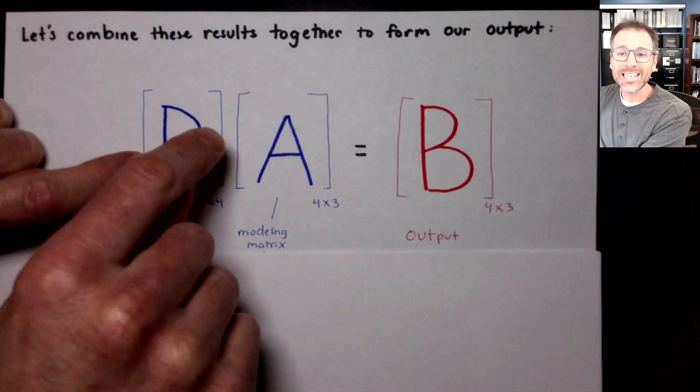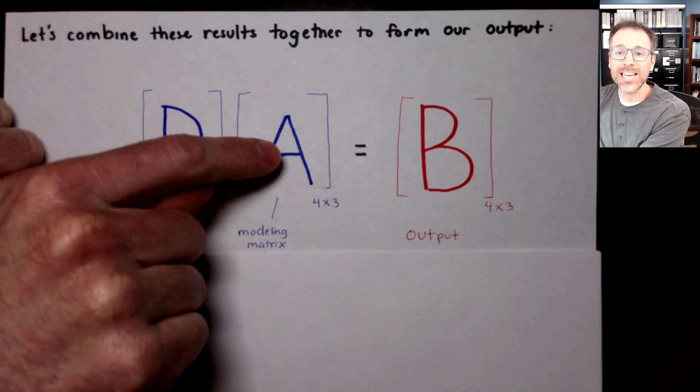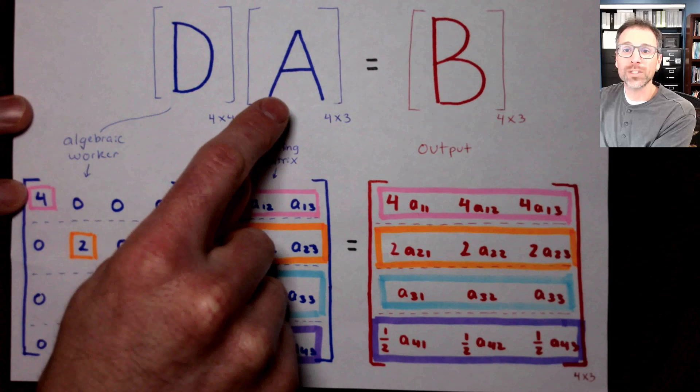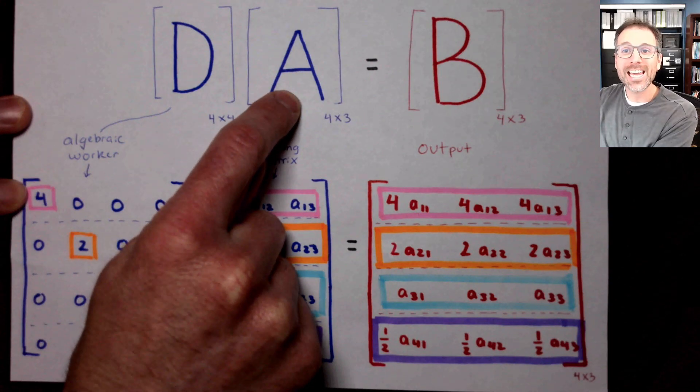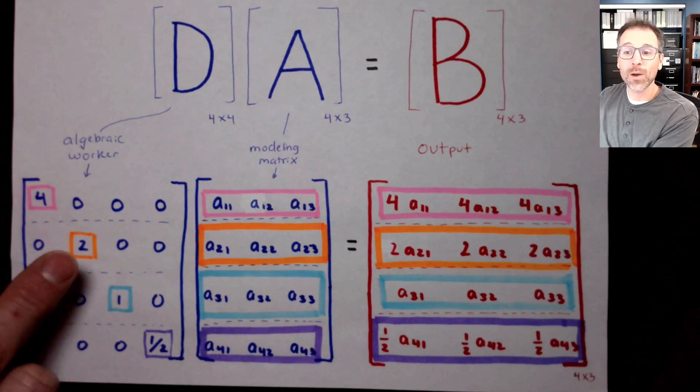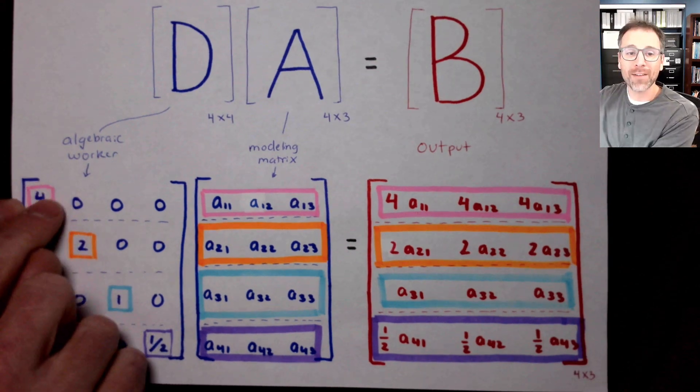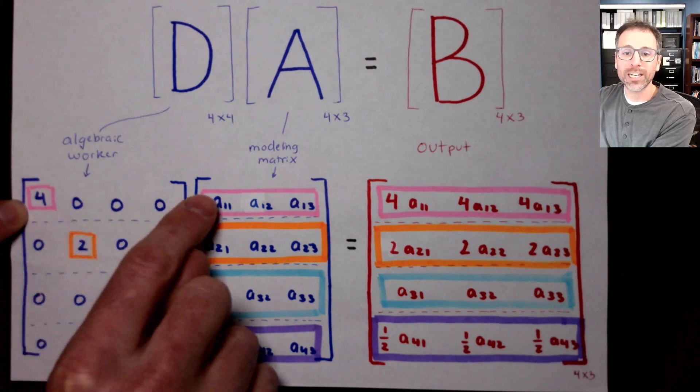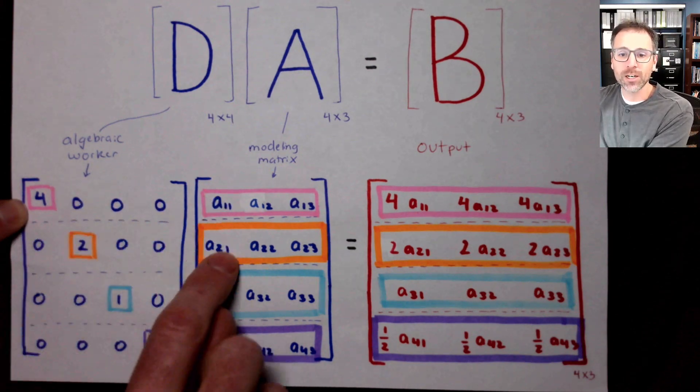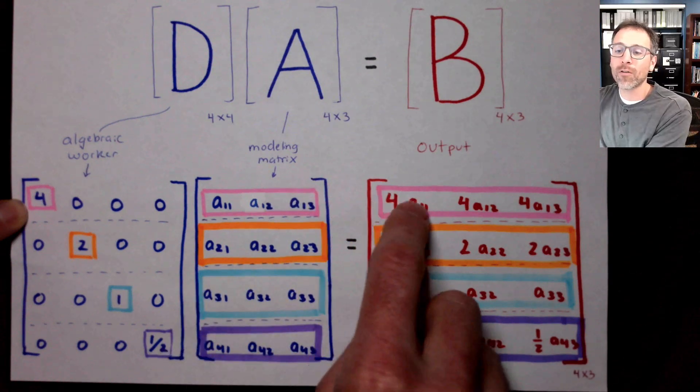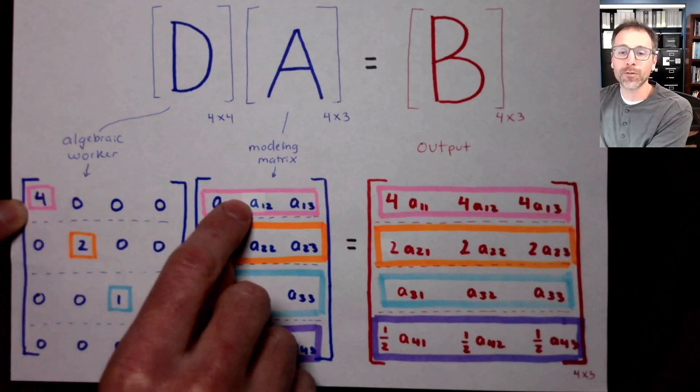Let's go ahead and combine the results together. Remember, we were looking for D times A equal B, and we did the individual rows since we were doing left matrix multiplication. The goal of this work was to scale the individual rows of A each by a different number, and we saw that we did that. So when I have the diagonal matrix four, two, one, one half, notice that we have color codes here. So this original match with the first row, all these zero annihilate access to these rows.